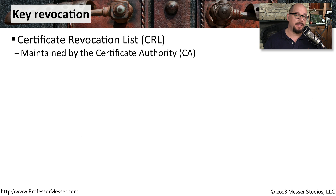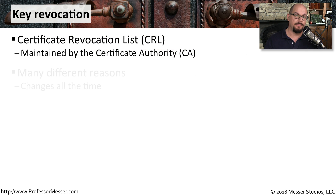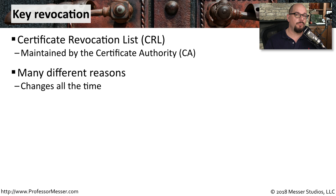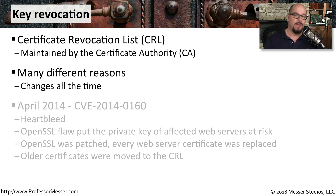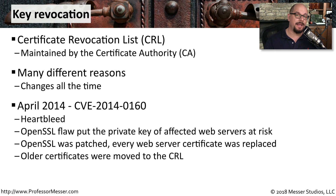The process for revoking certificates occurs on the certificate authority through a certificate revocation list, or a CRL. There are many different reasons for revoking a certificate — the certificate may be associated with a server that's no longer in use, or maybe the certificate was issued originally in error. Or you may have an instance where someone gains improper access to that certificate and you need to revoke it and assign another one.